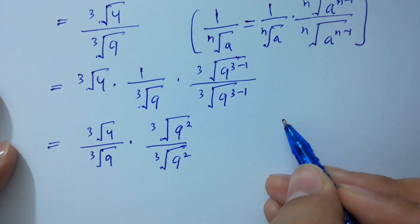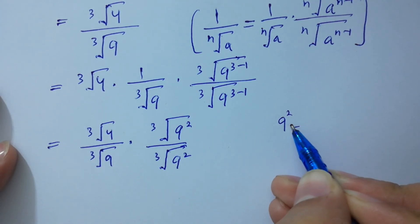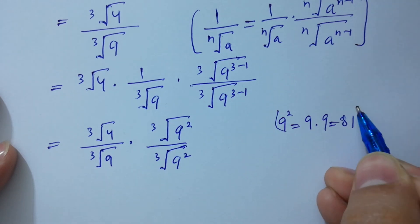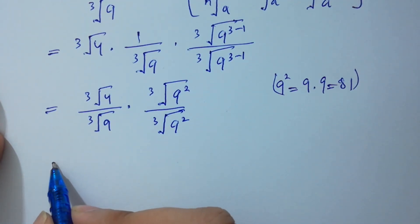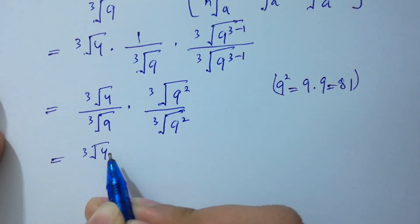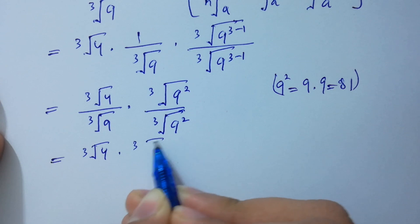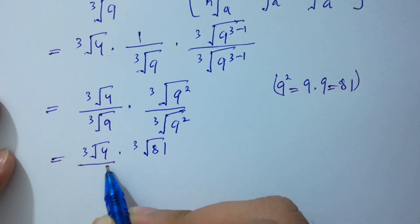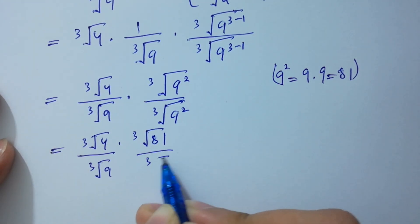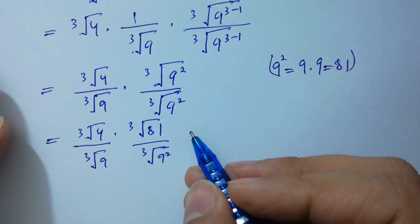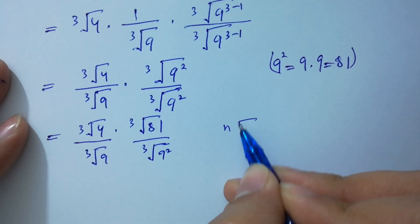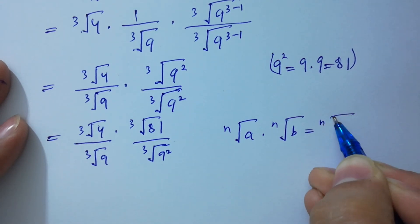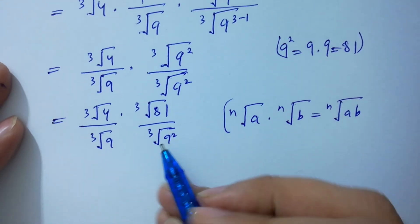In the next step, since 9 squared equals 9 times 9 which is 81, so it will be cube root 4 times cube root 9 to the power 3 minus 1 over cube root 9 to the power 3 minus 1. And since n root a times n root b equals n root ab, it will be cube root of 4 times 81.